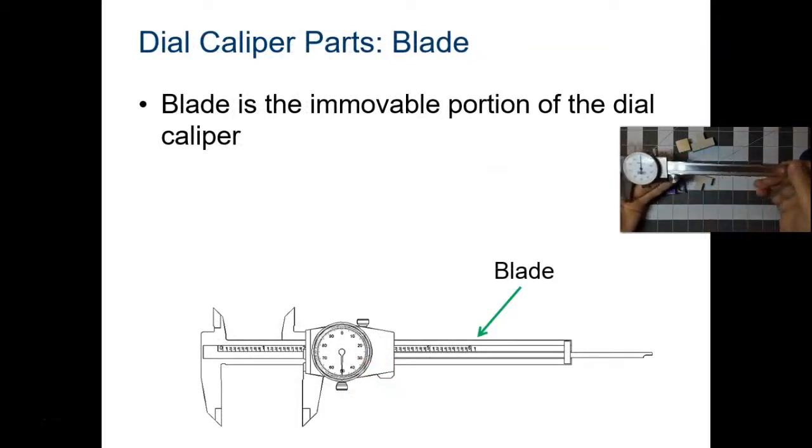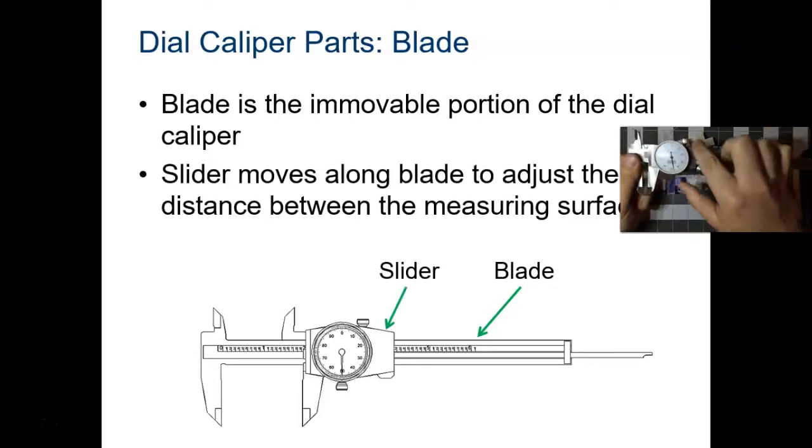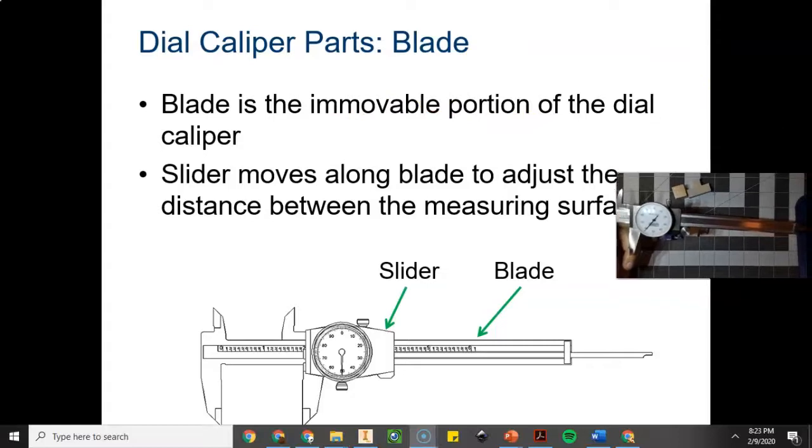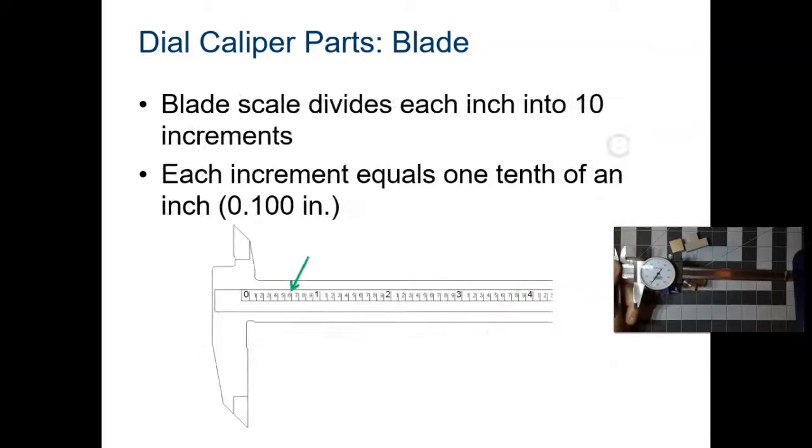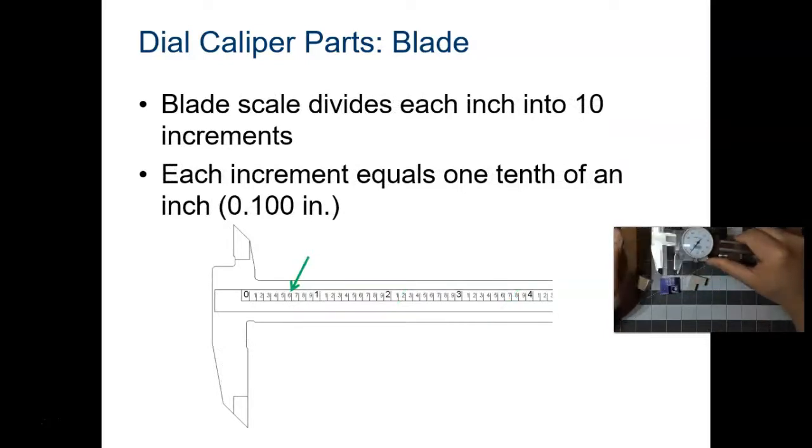This is the blade. The blade is the movable portion of the dial caliper. The slider moves along the blade. The blade scale divides each inch into ten increments, so each increment equals one tenth of an inch or 0.100.